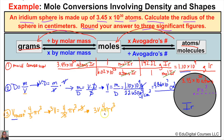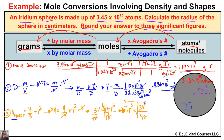We're trying to get r all by itself, so we divide both sides by 4 pi. The 4 pi cancels on the right-hand side, leaving us with r cubed equals 3V over 4 pi. We're not solving for r cubed — we're solving for r. So we take the cubed root of both sides. The formula we'll use is: radius equals the cubed root of 3V all over 4 pi.